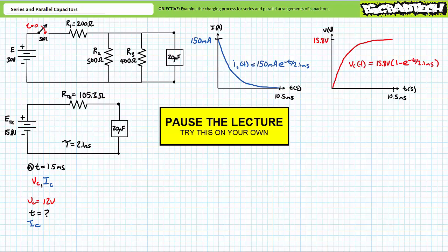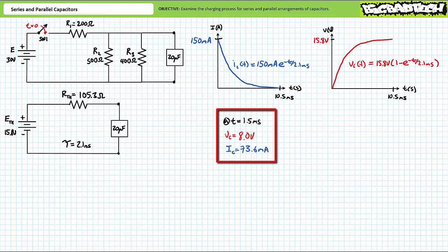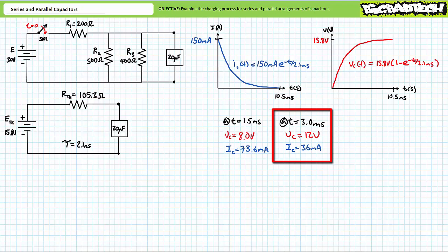If you're tracking, you should have obtained the following data. At 1.5 milliseconds, voltage across the capacitor is roughly 8 volts and current through the capacitor is roughly 73.6 milliamps. At t equals roughly 3 milliseconds, voltage across the capacitor is 12 volts and current through the capacitor is 36 milliamps. This concludes the transient analysis of the charging process for our total capacitance.